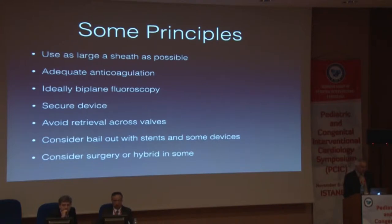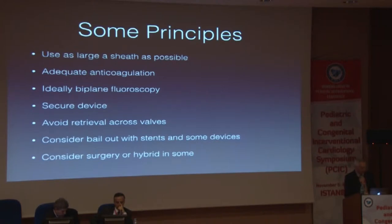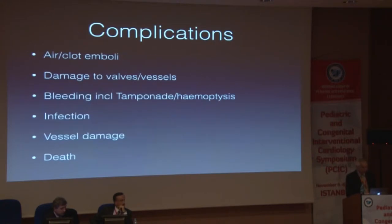Biplane imaging is ideal, especially if you have something lost in the pulmonary artery. You need to make sure that the device is secure — in other words, if it embolizes on the cath lab table and you know it's in a safe place, do something to try and keep it there. Avoid it from embolizing further. When retrieving devices, avoid crossing valves except with the device within the sheath, and think about bailout situations, especially with stents. Occasionally, you may have to think about surgery or hybrid, so have all options open.